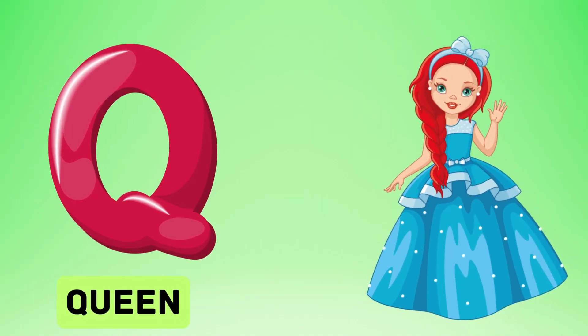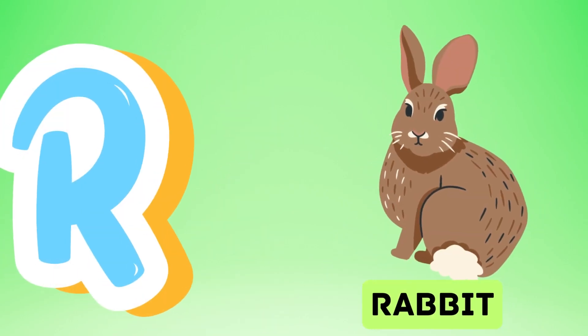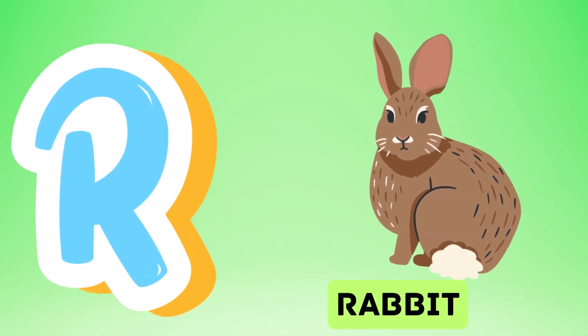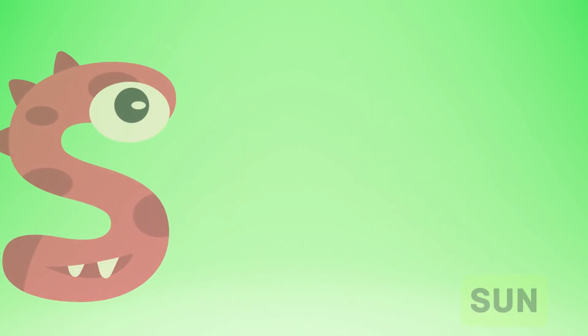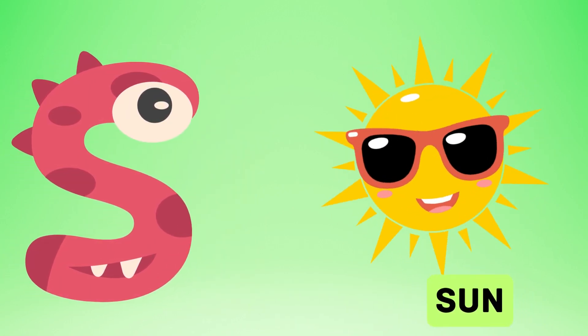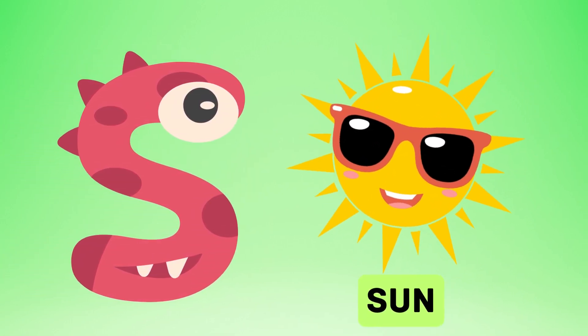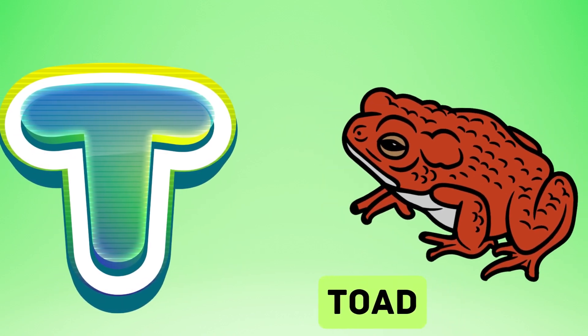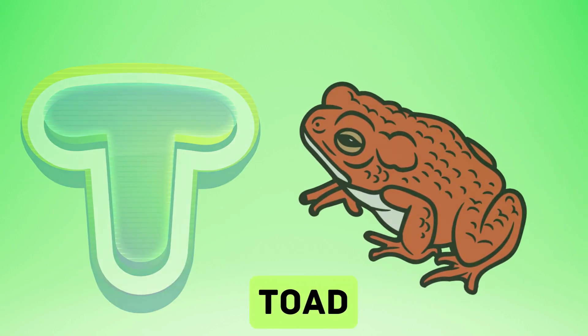Q is for queen, k-k-queen. R is for rabbit, r-r-rabbit. S is for sun, s-s-sun. T is for toad, t-t-toad.